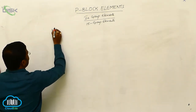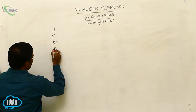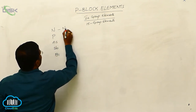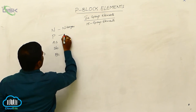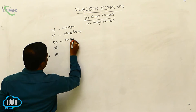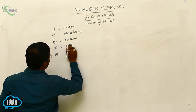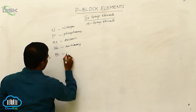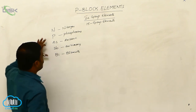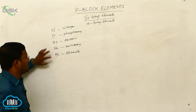The elements that come under the 15th Group are Nitrogen, Phosphorus, Arsenic, Antimony, and Bismuth. From these 15th Group Elements, we are going to study the physical and chemical properties of Nitrogen, Phosphorus, Arsenic, Antimony, and Bismuth.